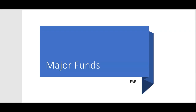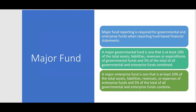What do we have to know about major funds versus non-major funds? Major fund reporting is required for governmental and enterprise funds when reporting fund-based financial statements. A major governmental fund is one that is at least 10% of the total assets, total liabilities, total revenues, or total expenditures of all governmental funds, and then it has to be 5% of the total of all governmental and enterprise funds combined.